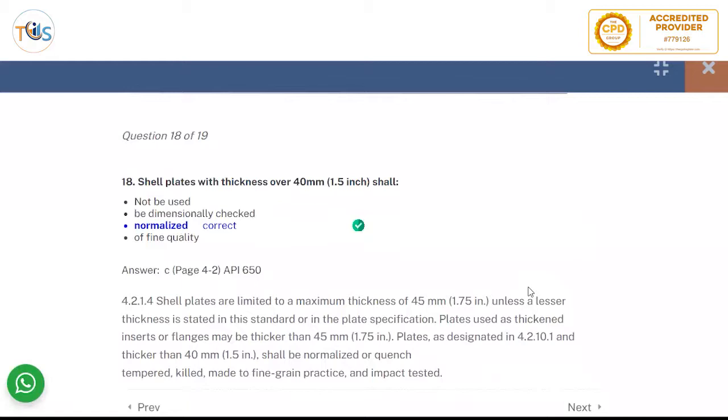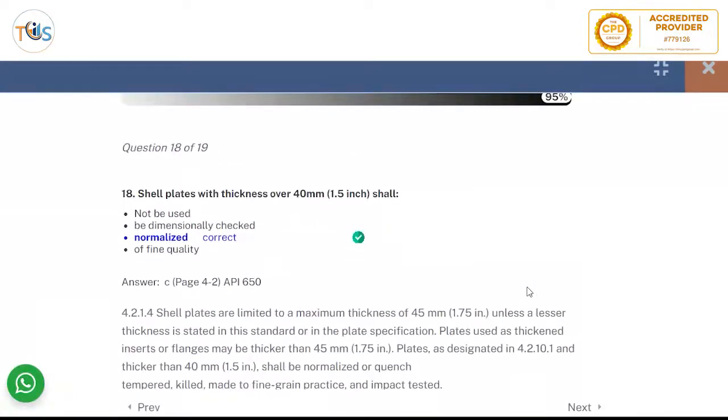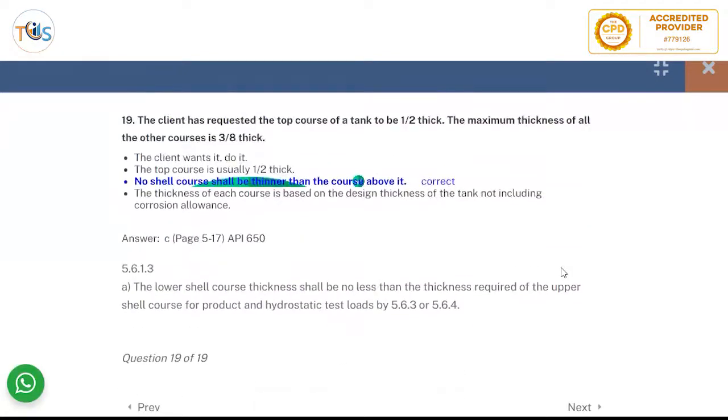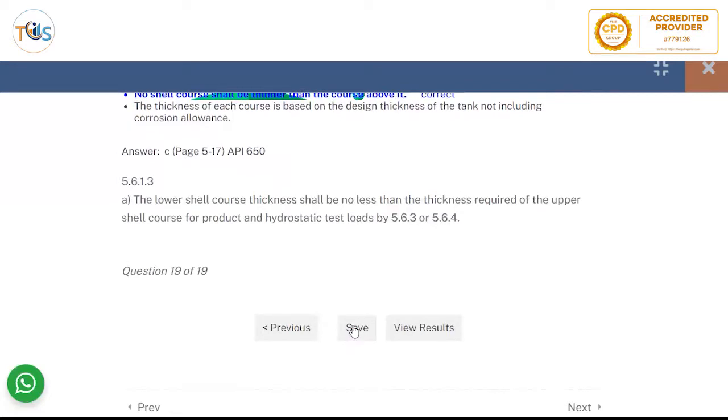Shell plates with a thickness over 40 millimeter shall be normalized. So you can, should be over 45 millimeter is not allowed. And over 40 millimeter it should be normalized, quenched and tempered, and fine grained and killed. And any brittle fracture. Client has requested the top course of tank to be half an inch thick. The maximum thickness of all other courses three by eight inch. Now you can see a three by eight inch is less than half an inch or four by eight inch. So you cannot have a shell course above another shell and it's thicker. So it's always less than that or at most equal to the shell below it. So this is a code requirement. And this will be a violation. The manufacturer should not accept that.